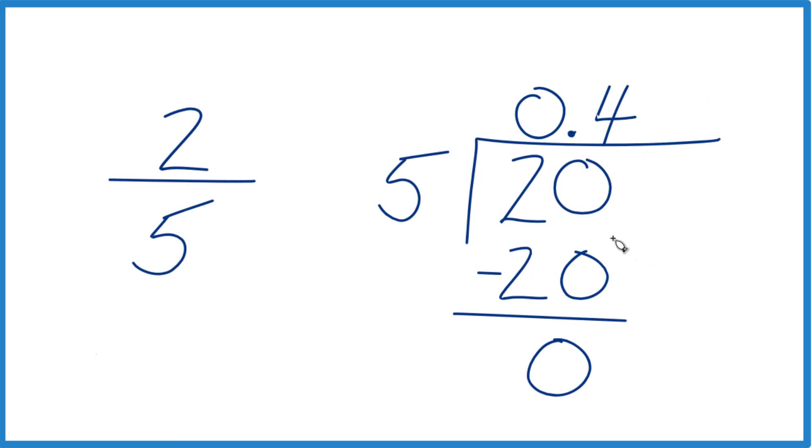But really, since two-fifths gives you exactly 0.4, probably best to leave it like this. It's Dr. B. Thanks for watching.